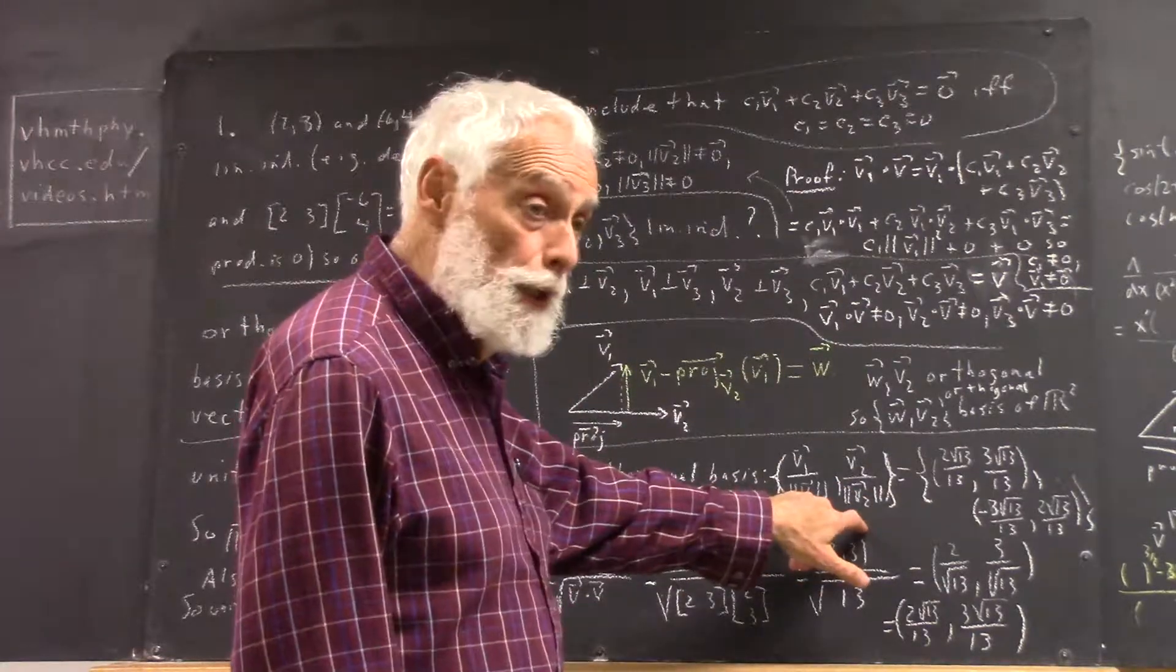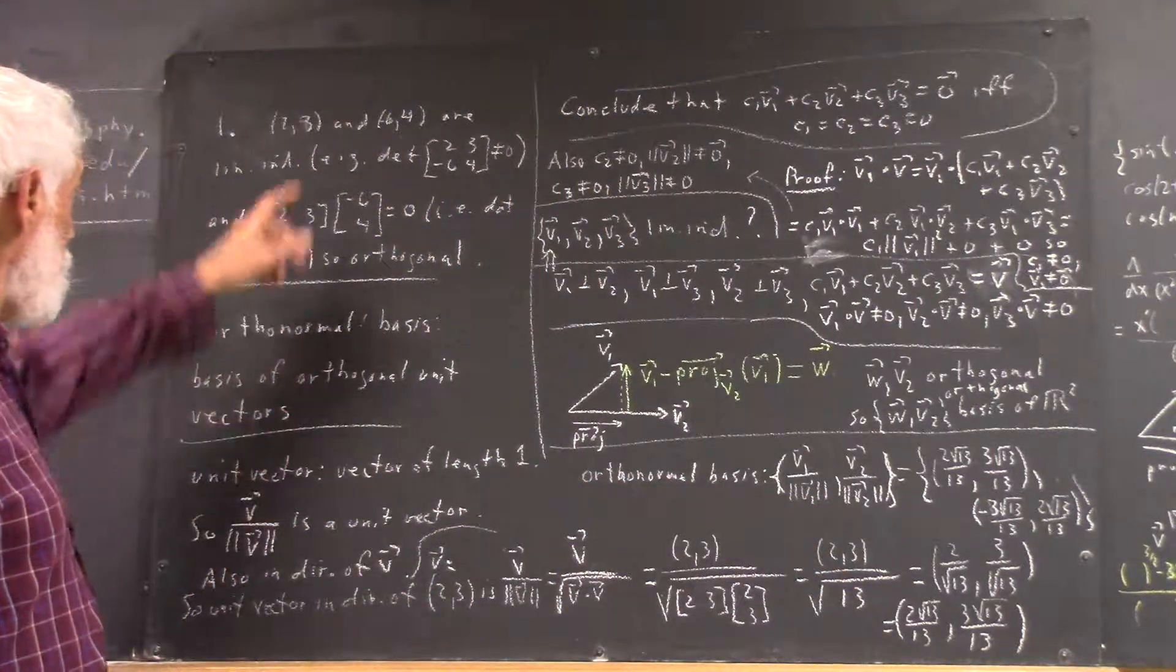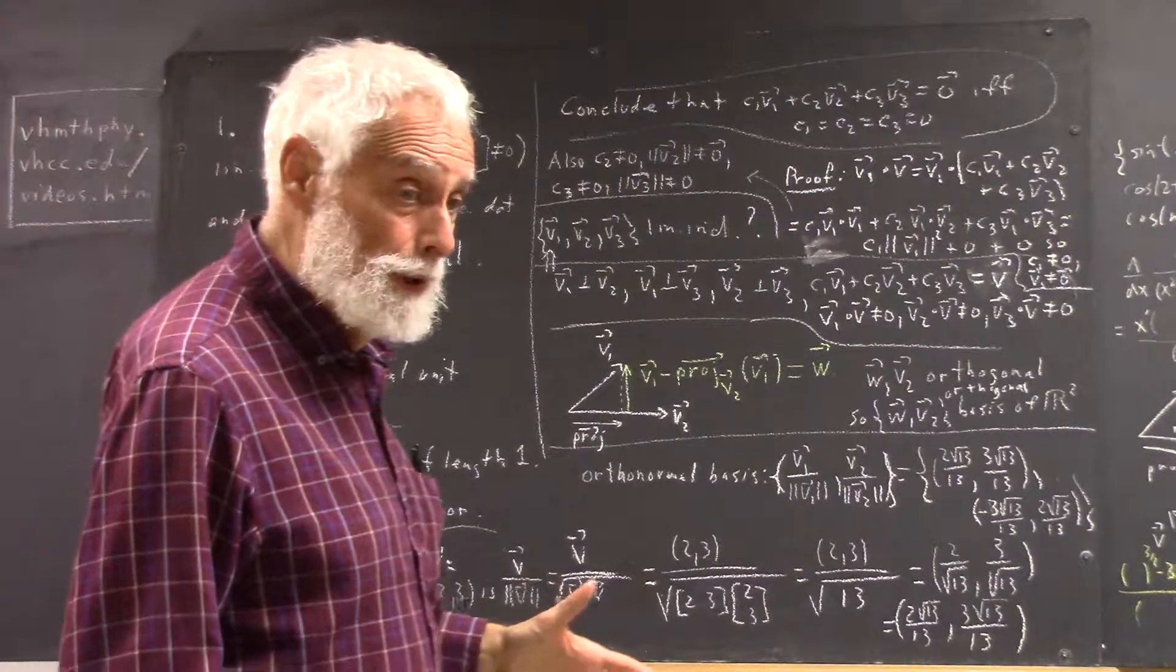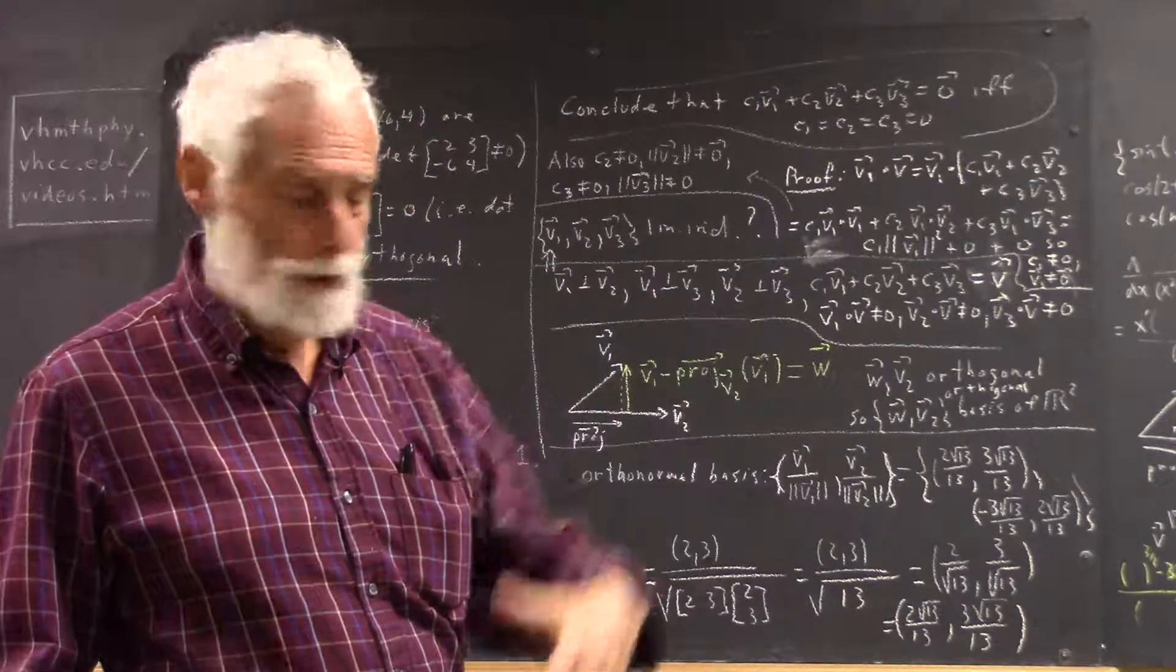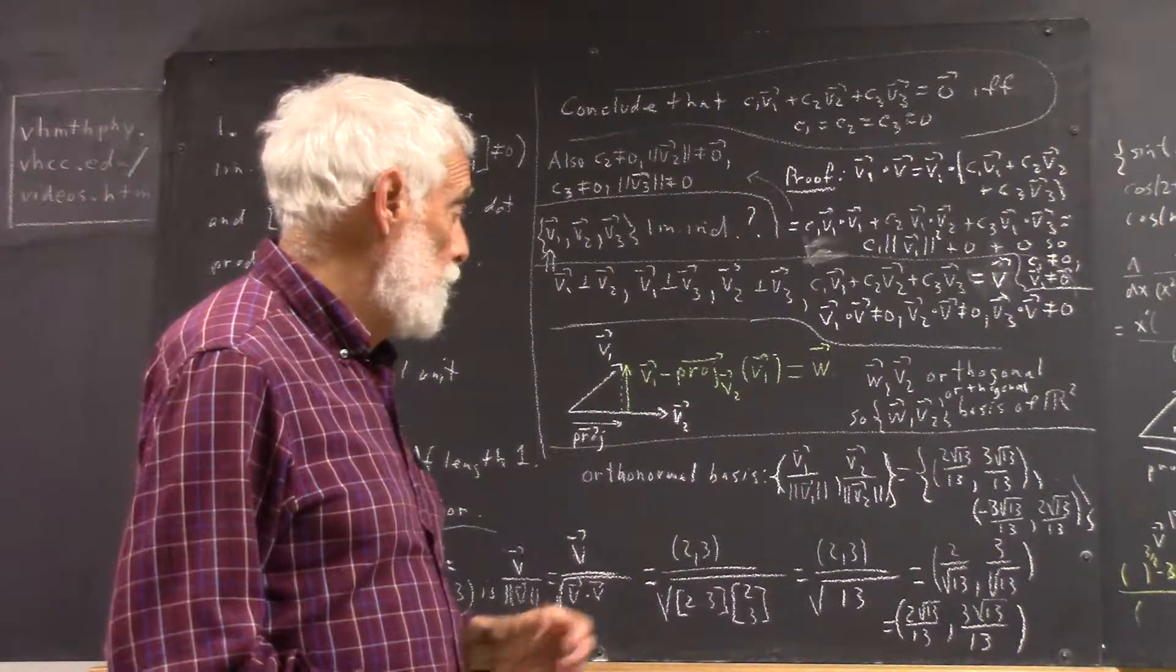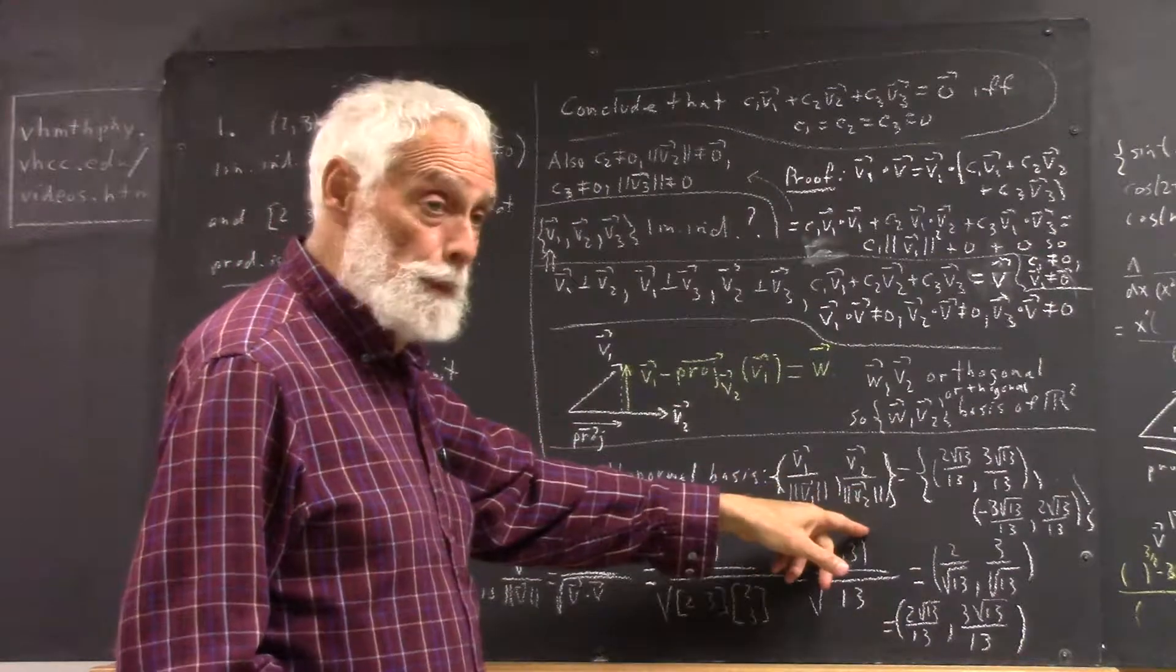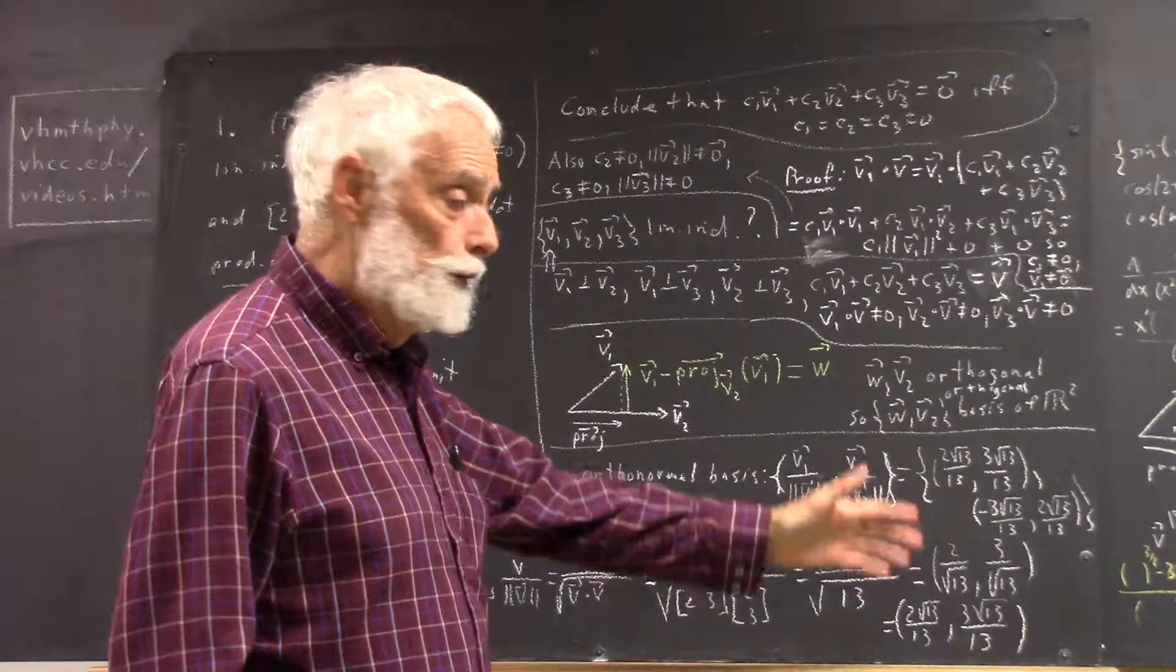Now, remember, we could do that since V1, V2 is already an orthogonal basis. You can't get an orthonormal basis in this straightforward manner. We'll see shortly how you can get one, but you can't get it just by dividing a vector by a magnitude, each vector by its magnitude, unless those vectors are already orthogonal.